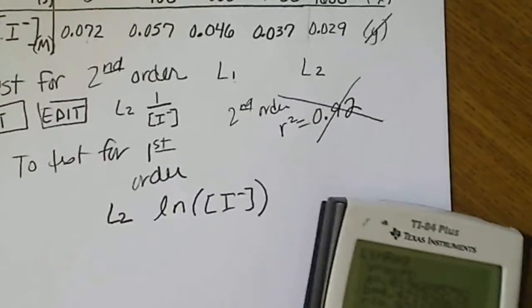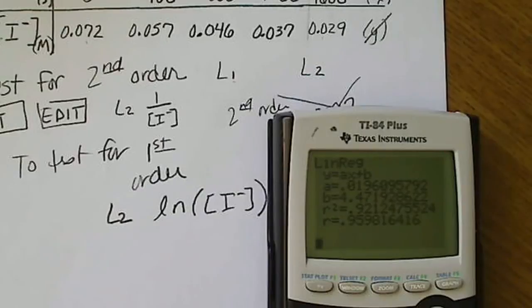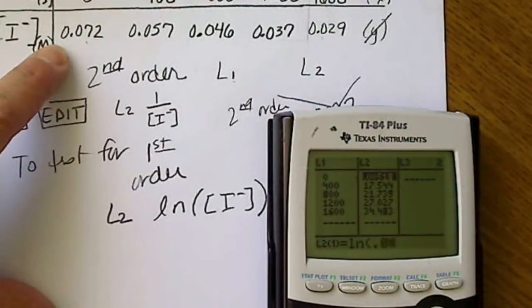So if I go back to that, I can go back to my stat and edit, and I just need to change this. I can take the natural log of each one of these points.